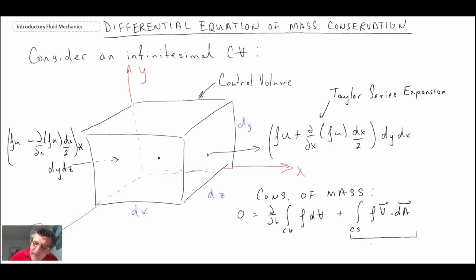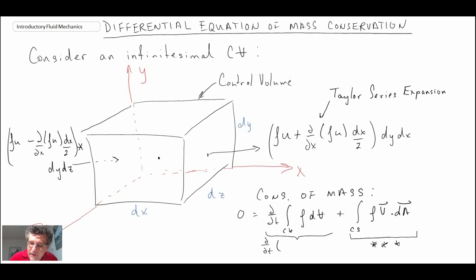This term here we are going to look at in a moment. First, let's take a look at the first term, which we can re-express as the time rate of change of density times the volume of the differential element. The volume of the differential element is dx dy dz.